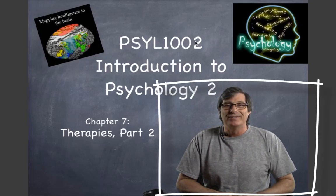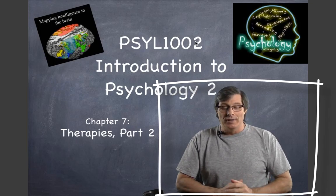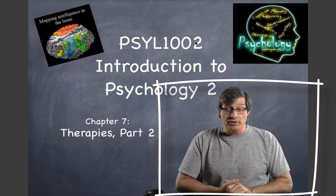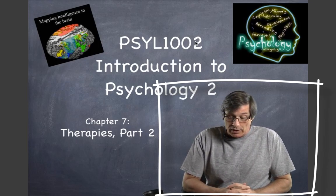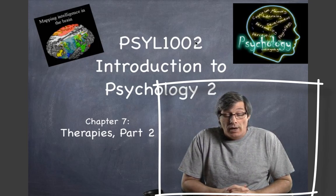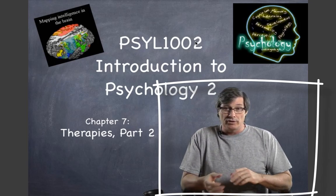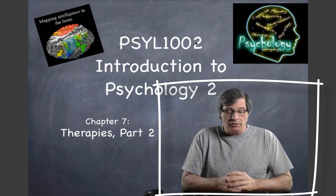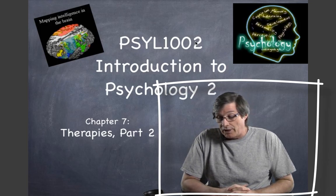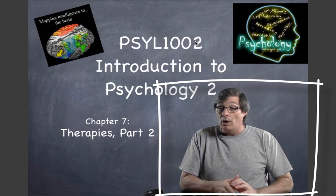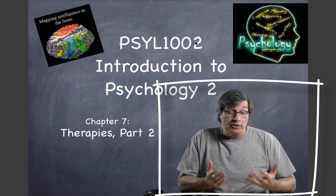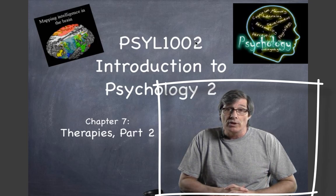Here we are, last week, doing therapies for psychological disorders part two. We're going to cover cognitive therapies — we'll touch on the rational emotive therapy by Ellis and Beck's cognitive therapy — and we'll look at cognitive behavior therapy as well. Then we're going to look at biomedical therapy: drug therapy, electroconvulsive therapy, and psychosurgery. We'll lastly look at therapies and therapists. This is the last video — you've been doing really well, I appreciate your time and effort.